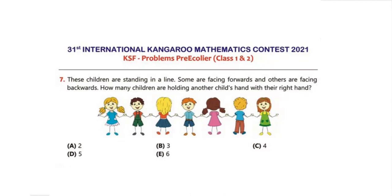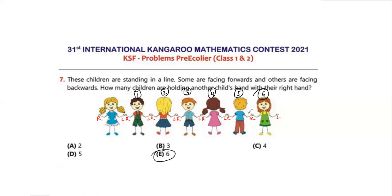Identifying each child's right hand: for those facing forward, the right and left hands are straightforward. For the child facing backward, the orientation is reversed. Going through each child and counting who is holding hands with their right hand — counting one, two, three, four, five, six. The answer is option E, six.